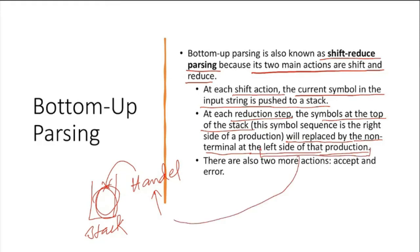There are also two more actions: accept and error. The accept action happens when we do the final reduction and reach the start symbol S — that final action is accept. If it is not possible to make any decision, it is called an error.